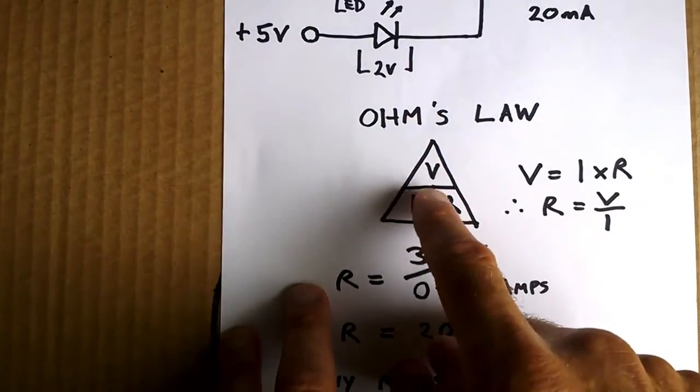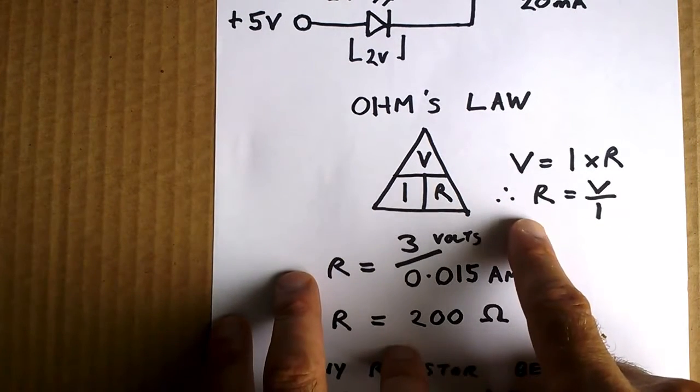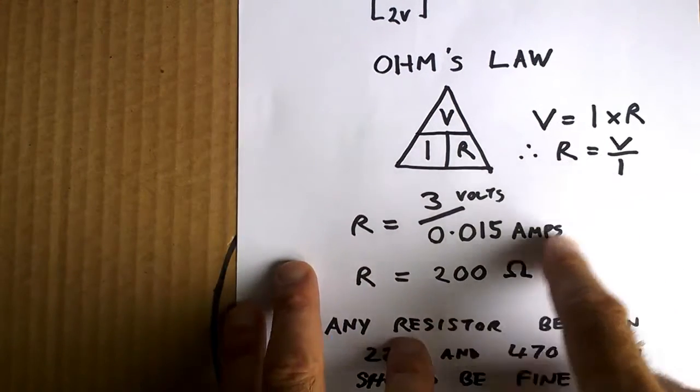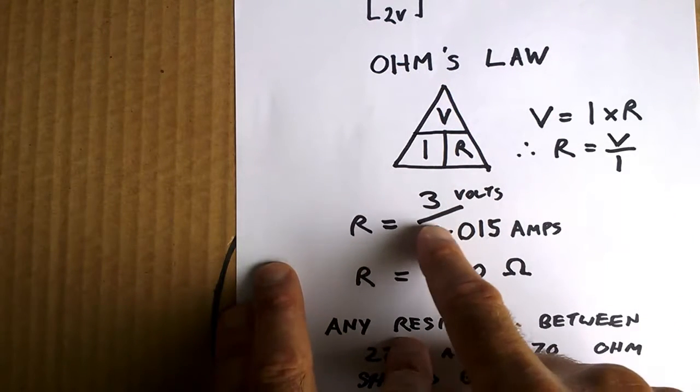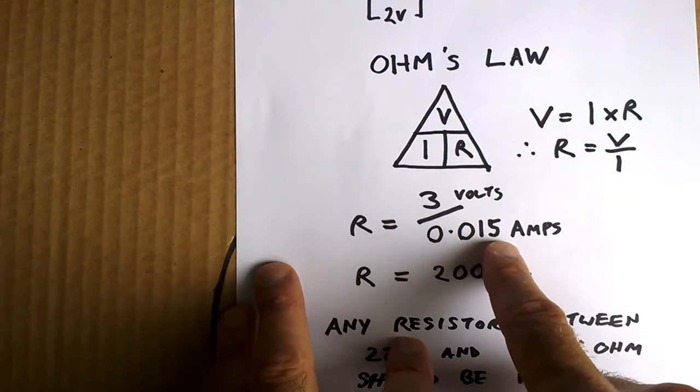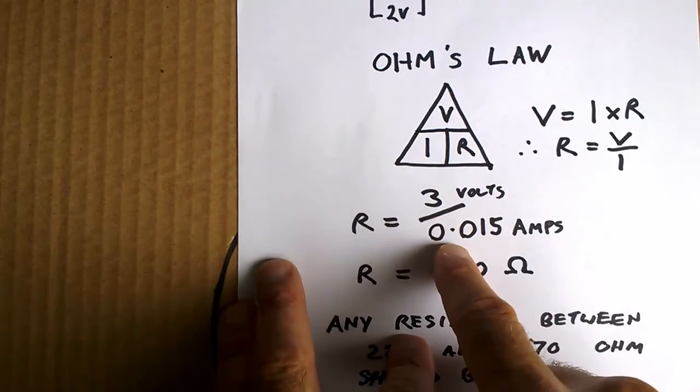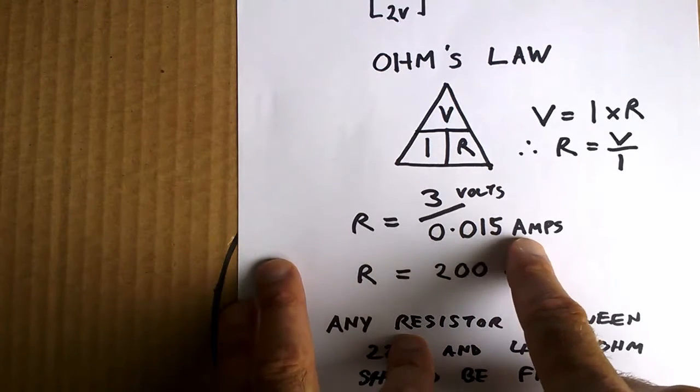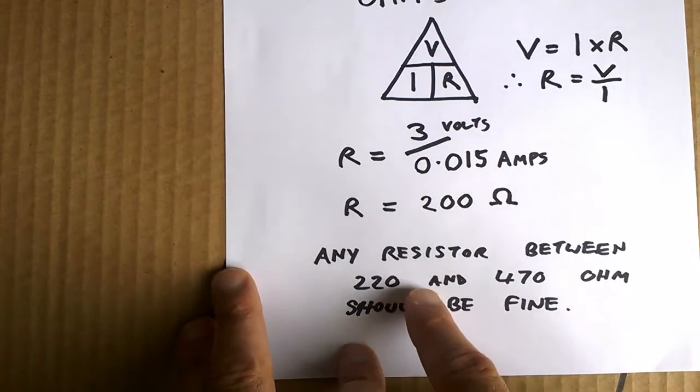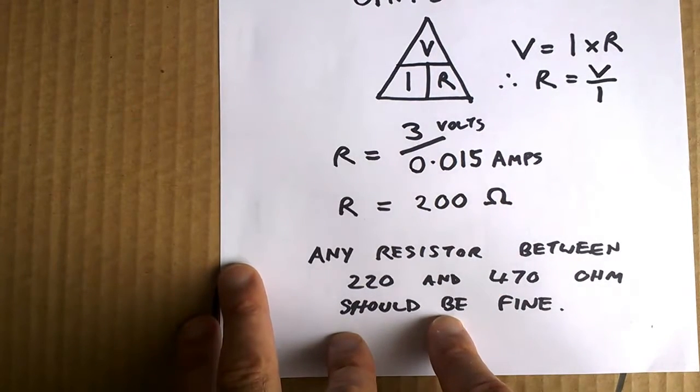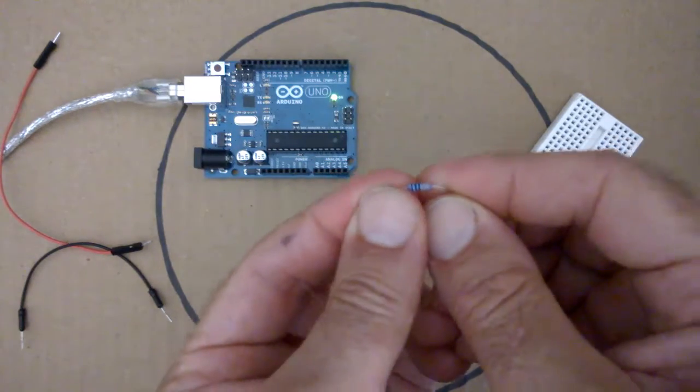So with Ohm's Law we've got voltage V equals I times R, current times resistance. Therefore resistance equals voltage over current. So if we're using that 3 volts that we're left with, the resistance will equal 3 volts over, and I've said here that I want to have around about 15 milliamps just to be safe. So we've got resistance equals 3 volts over 0.015 amps, and that gives us a resistance of 200 ohms. In this case, any resistor between 220 and 470 should be fine. For our circuit we are going to use a 330 ohm resistor, so that should be fine.